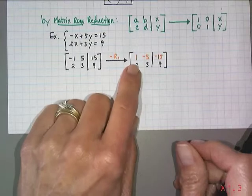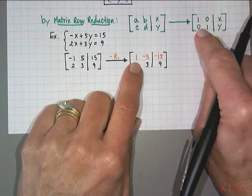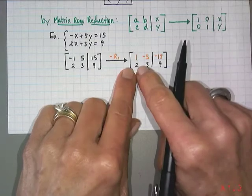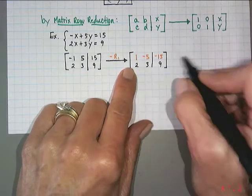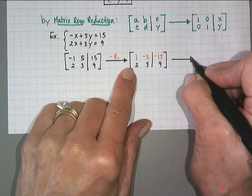All right. I got a one in a spot, that's awesome. My next goal is to get the zero right below it, so I need to change that two into a zero. How I do it is through a series of matrix or row operations.